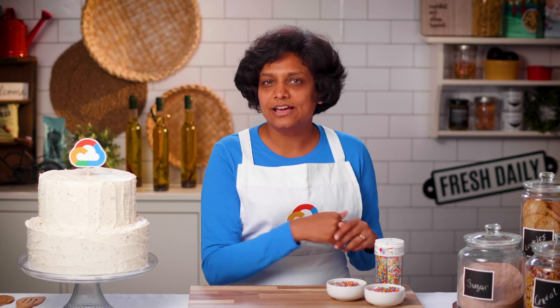When the production environment is running on-premise again and can support production workloads, MainStreetArt has to reverse the steps that they followed during the failover. A typical sequence to return to the production environment is: take a backup of the database running on Google Cloud, then copy and apply the backup files to the database in the production environment. Then prevent connections to the application in Google Cloud — one way to do this is to modify the firewall rules. From this point, the application will be unavailable until we finish restoring the production environment. Don't forget to copy any transaction log files over to the production environment and apply them to the database.